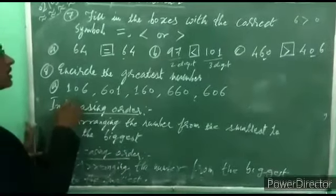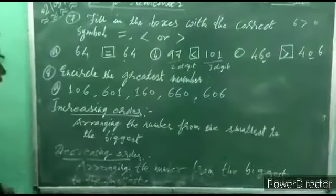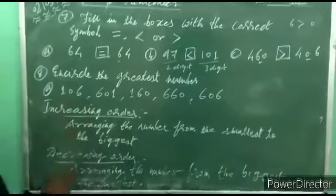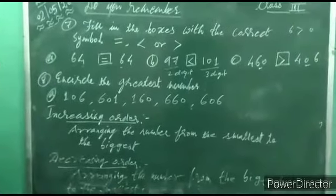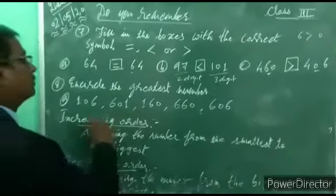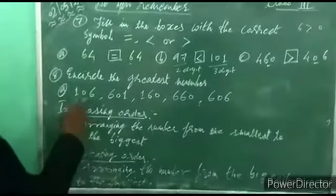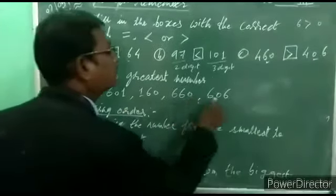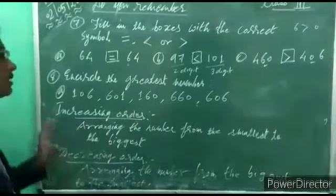Here, 5 numbers are given: 106, 601, 160, 660, 606 — total 5 numbers. Now, how many digits? Count them — all are 3-digit numbers. Now, how to compare? First, we have to select the greatest number, then circle it. Compare their place values — in the hundreds place: 1, 6, 1, 6, 6. Since 1 is less than 6, eliminate 106 and 160.